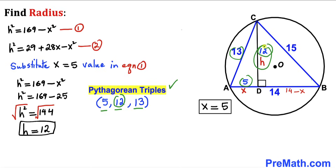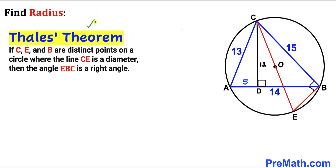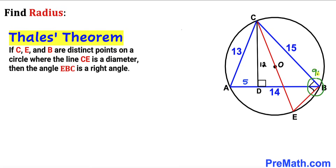Next, I have drawn diameter CE passing through center O. Our task is to find the length of this diameter CE to determine the radius. I've connected point E with point B to get segment EB. Recalling Thales' theorem: if C, E, and B are three distinct points on the circle where CE is a diameter, then angle EBC is a right angle — which we can confirm in our diagram.